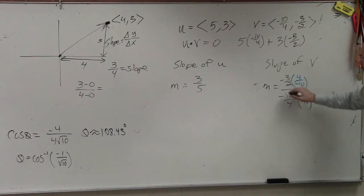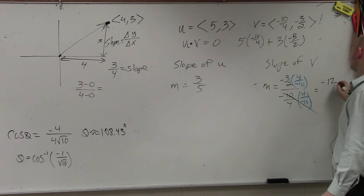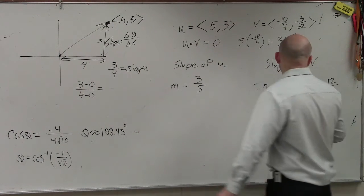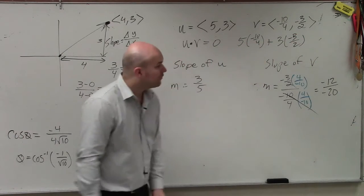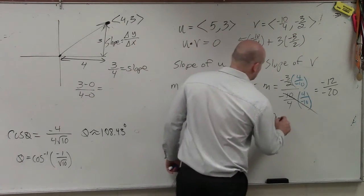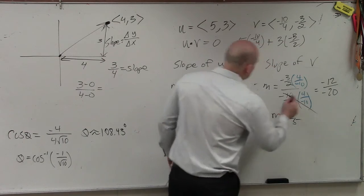Anytime you multiply a number by its reciprocal, that's going to go to 1. You're left with negative 12 over negative 20. And therefore, if you divide the top and bottom by 4, you can simplify that to 3 fifths.